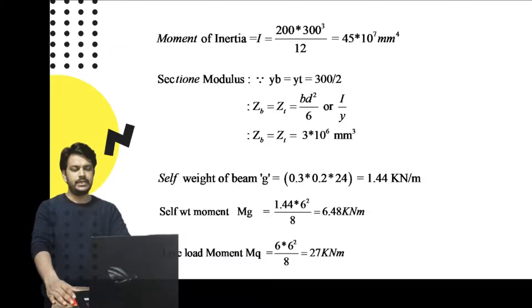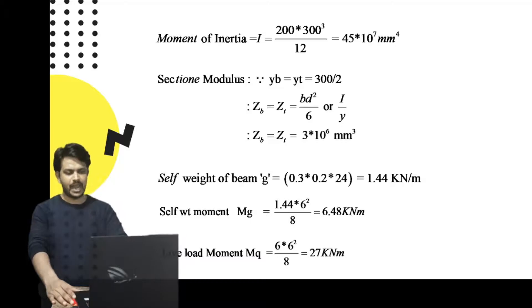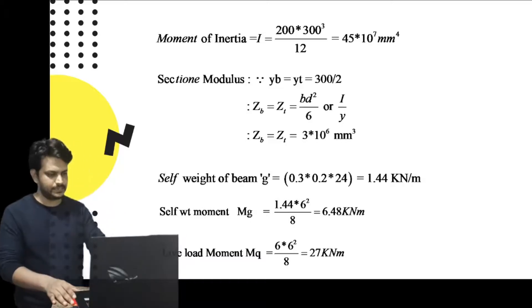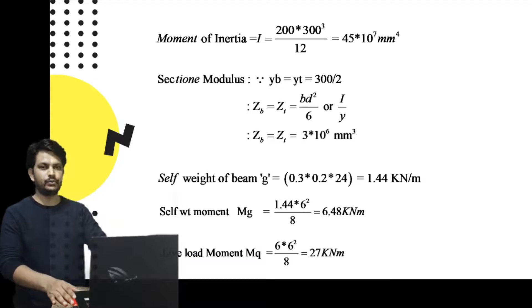The live load is given as 6 kN/m. The moment due to live load is MQ = 6 × 6² / 8 = 27 kN·m.